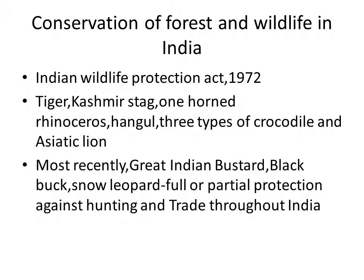Central and many state governments established national parks and wildlife sanctuaries. The central government also announced several projects for protecting specific gravely threatened animals, including the tiger, the one-horned rhinoceros, the Kashmir stag or Hangul, three types of crocodiles — freshwater crocodile, saltwater crocodile and the gharial — the Asiatic lion, the Indian elephant, black buck, great Indian bustard, and the snow leopard, all given full or partial legal protection against hunting and trade.